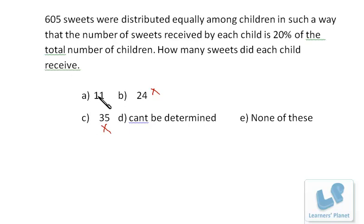Now, we are left with 11, right? Now, 605 divided by 11, we get 55. That means 55 times 11 is 605, right? So, 55 is the number of children and 11 is the number of sweets that each child is getting.